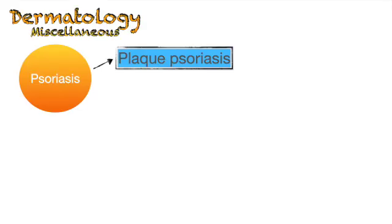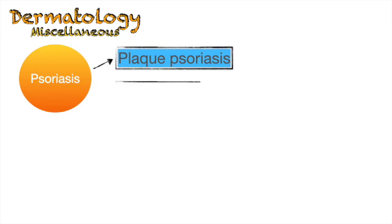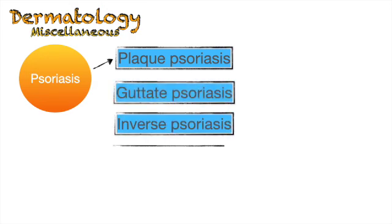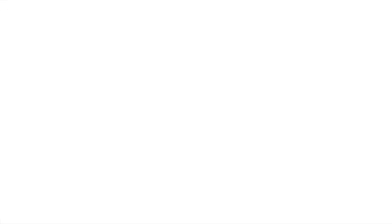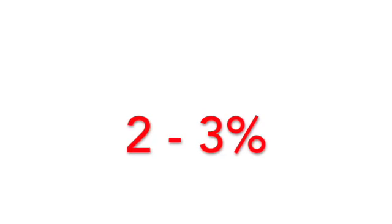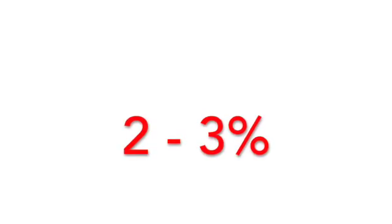There are different types of psoriasis. The most common type is plaque psoriasis. Other types include guttate psoriasis, inverse psoriasis, pustular psoriasis, and erythrodermic psoriasis. Psoriasis affects 2 to 3 percent of the population, and it is not contagious.